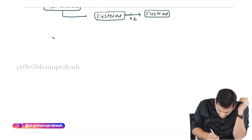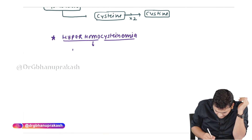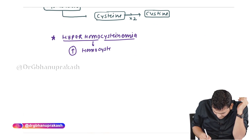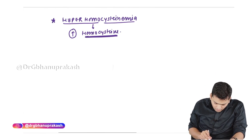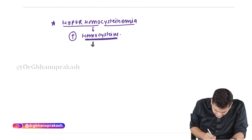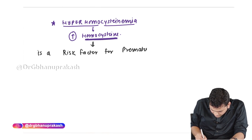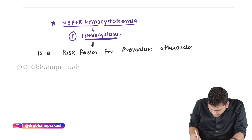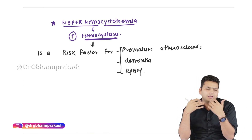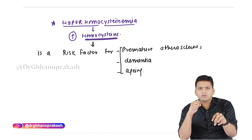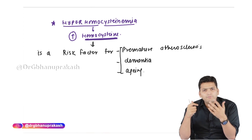Hyperhomocysteinemia is basically an increased level of homocysteine in the blood. An increased homocysteine level is a risk factor for several disorders, including premature atherosclerosis, dementia, and premature aging. Homocysteine leads to a hypercoagulable state, and if there is increased coagulability of the blood it can lead to myocardial infarction and deep vein thrombosis.